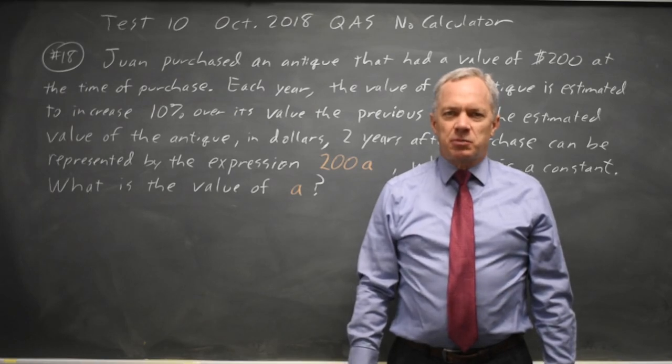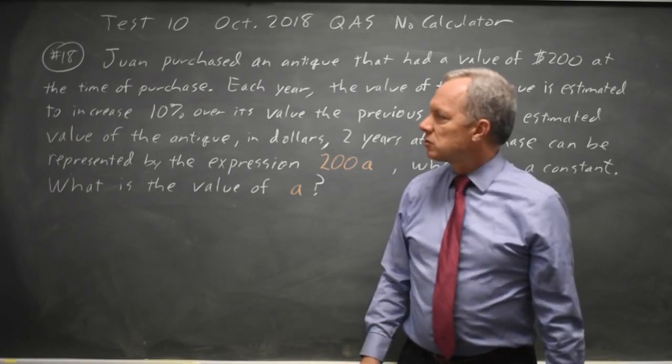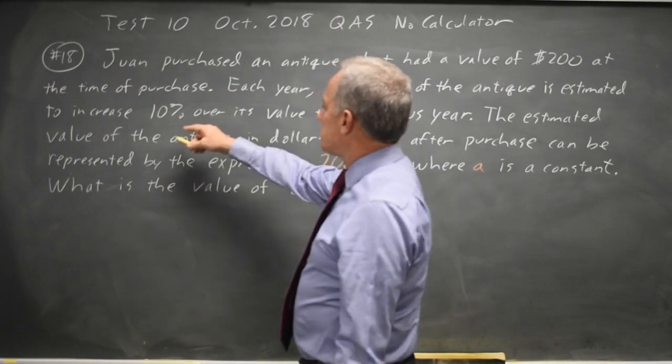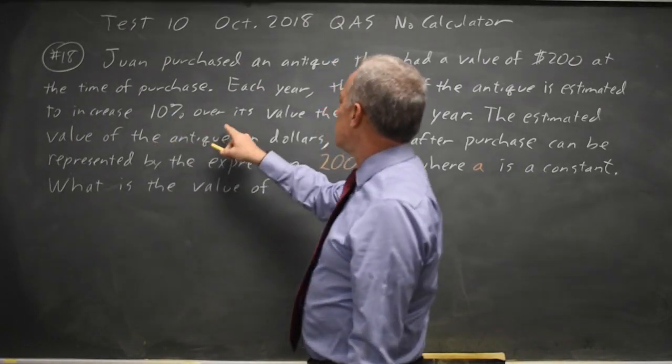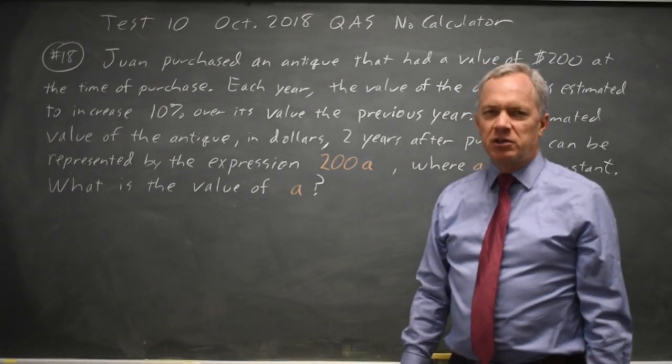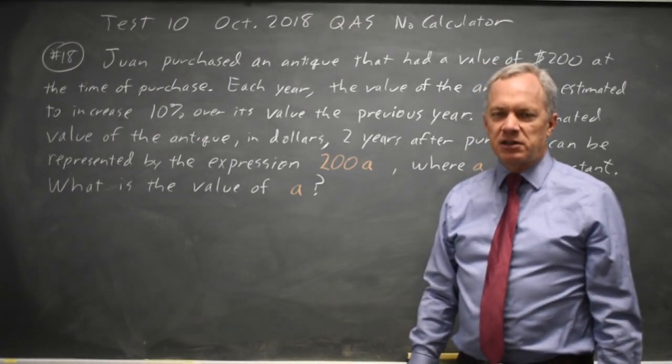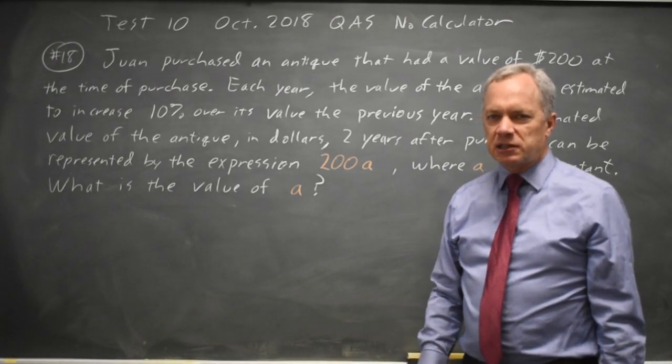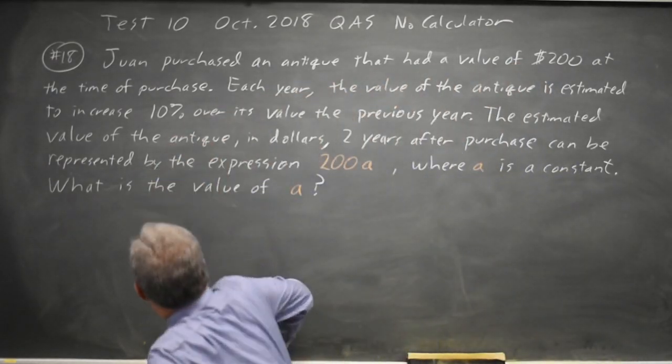This is question 18. The College Board is asking about exponential growth. As we can see, because each year is 10% over the value from the previous year, any time you're multiplying the previous value by a constant rather than adding a constant, multiplying by a constant is exponential growth.